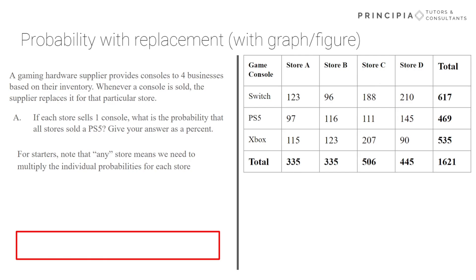All right, welcome back. When I mentioned before, we want to list out the known values. So first thing, the probability of a PS5 from store one, 97 out of 335. From store two, 116 out of 335. I'm just using the values given from the table. That's where the numbers are coming from. And from store three, it's 111 out of 506. And store four is 145 out of 445. And so if I want to know all stores selling that console, I would need to multiply all of these probabilities and that would yield 0.717%. Seeing as we've been asked to give the answer as a percent, we're good to go.